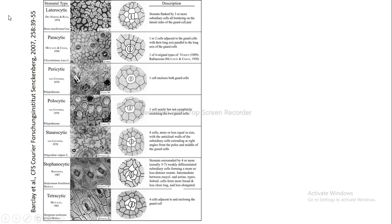Laterocytic means the stomata are flanked by three or more subsidiary cells, all bordering on the lateral sides of the guard cells. So the lateral sides of the guard cells are surrounded by three or more subsidiary cells.